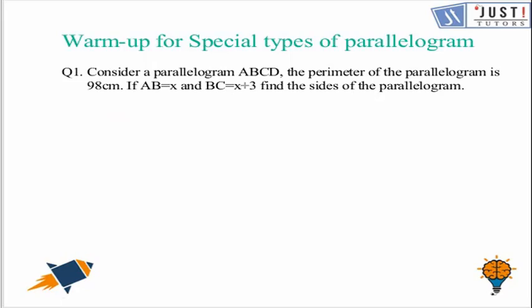So, we are given parallelogram ABCD. Right, so I'll just draw that for you. Don't go with my drawing. It is given that AB is X and BC is X plus 3, and we're given the perimeter.